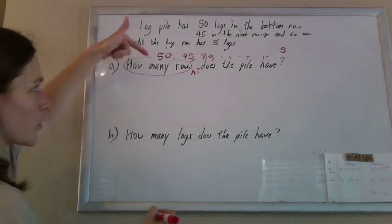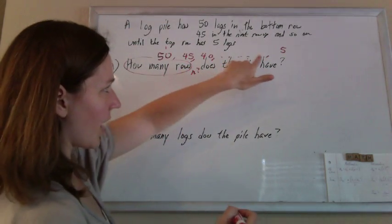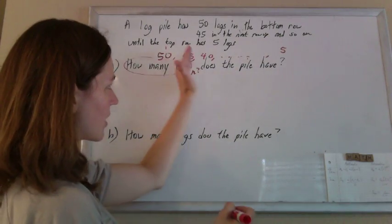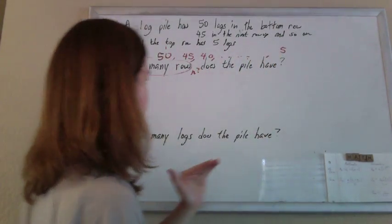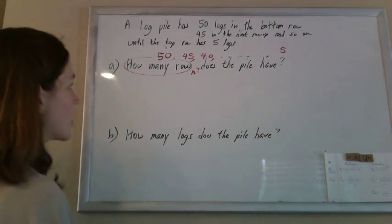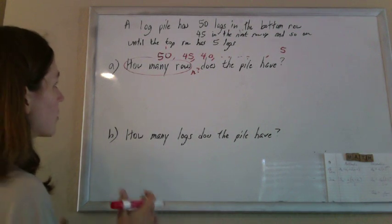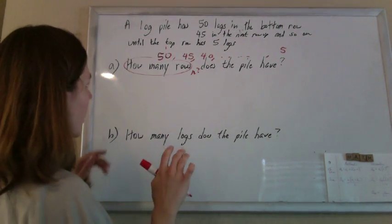Now this isn't a very big number. You could just keep subtracting 5 until you get to this and count up how many rows that is. In fact, you can totally do that to check. But if the numbers are nasty, if your teacher wants to see your work, fine, we'll use a formula.